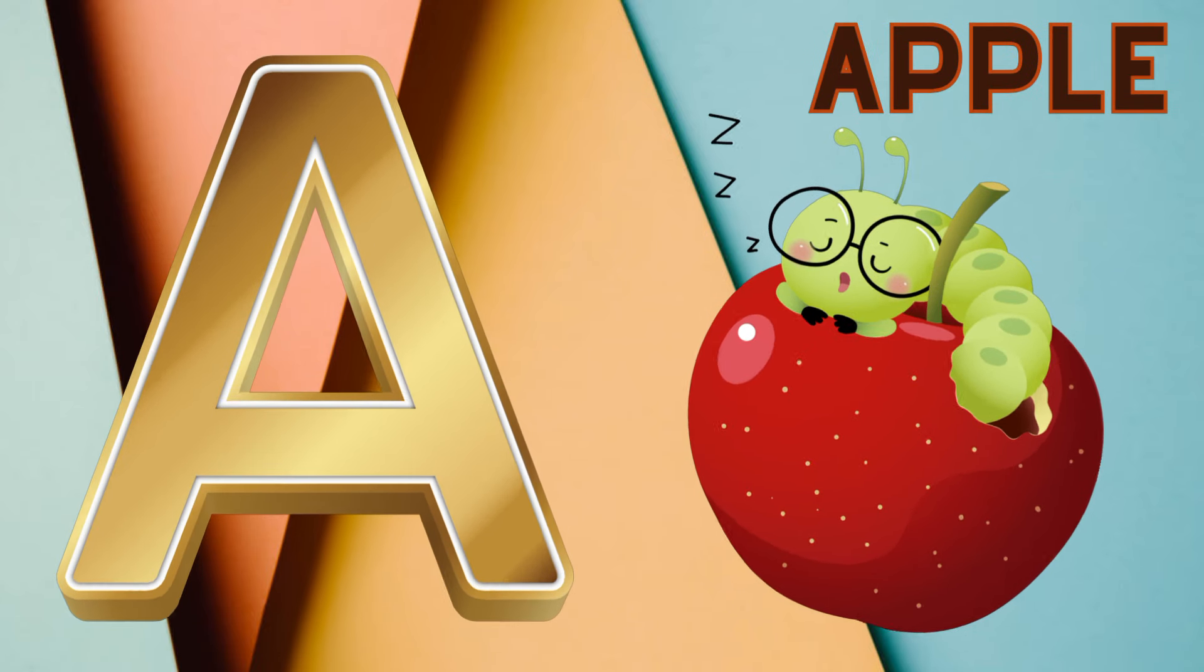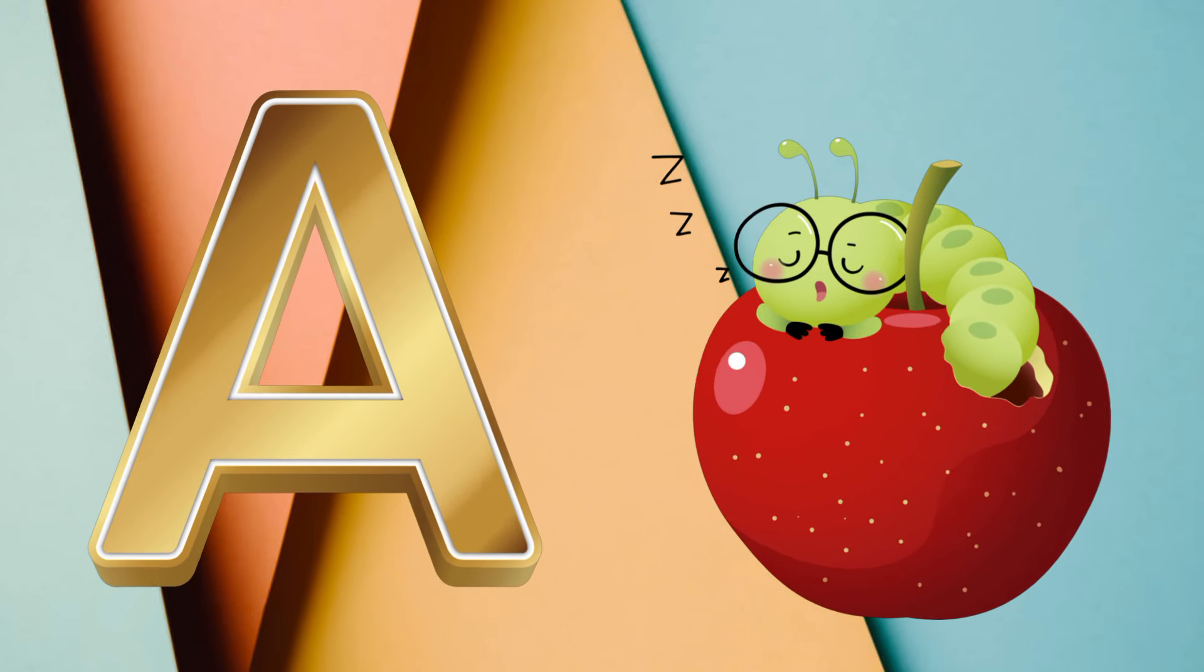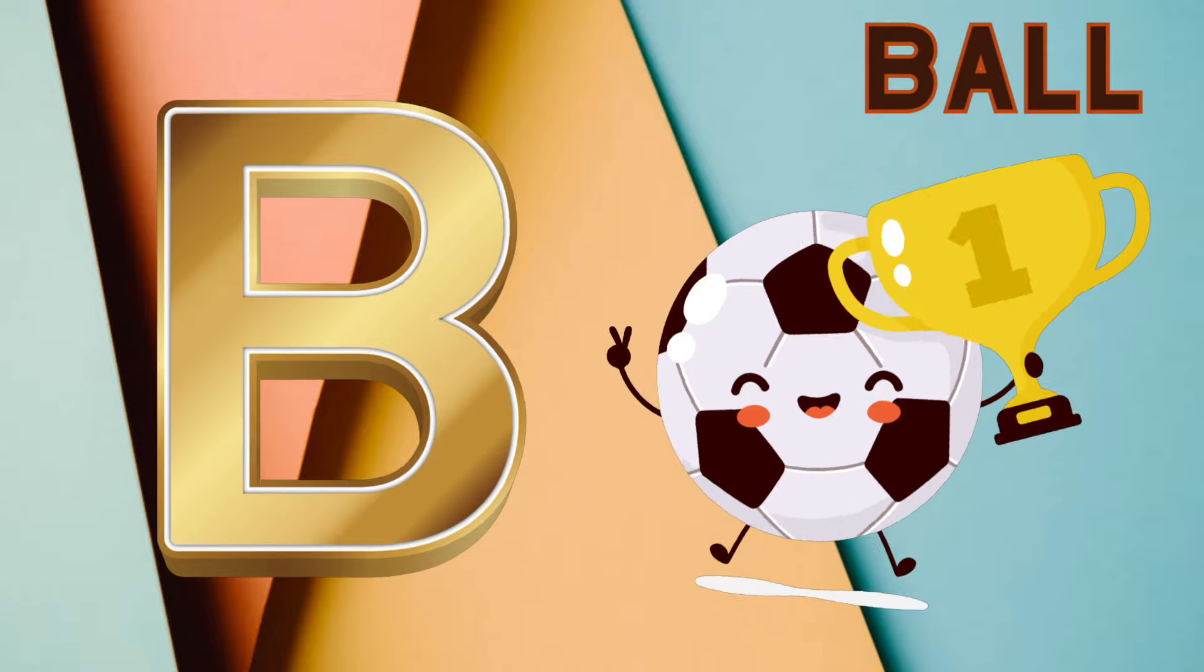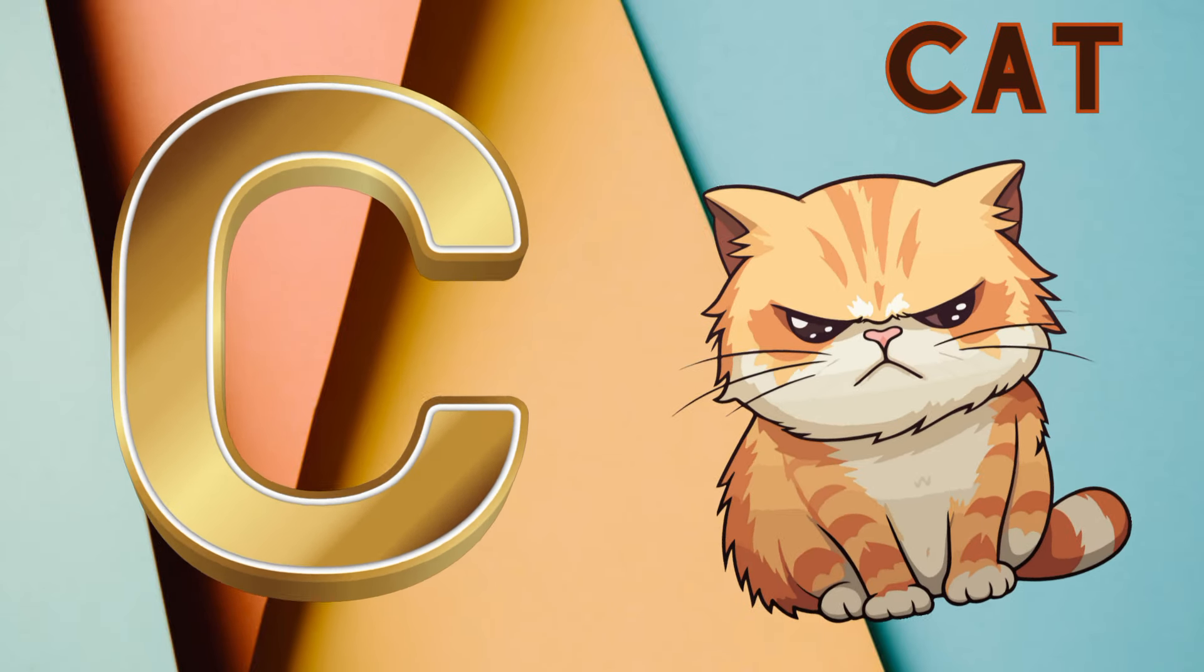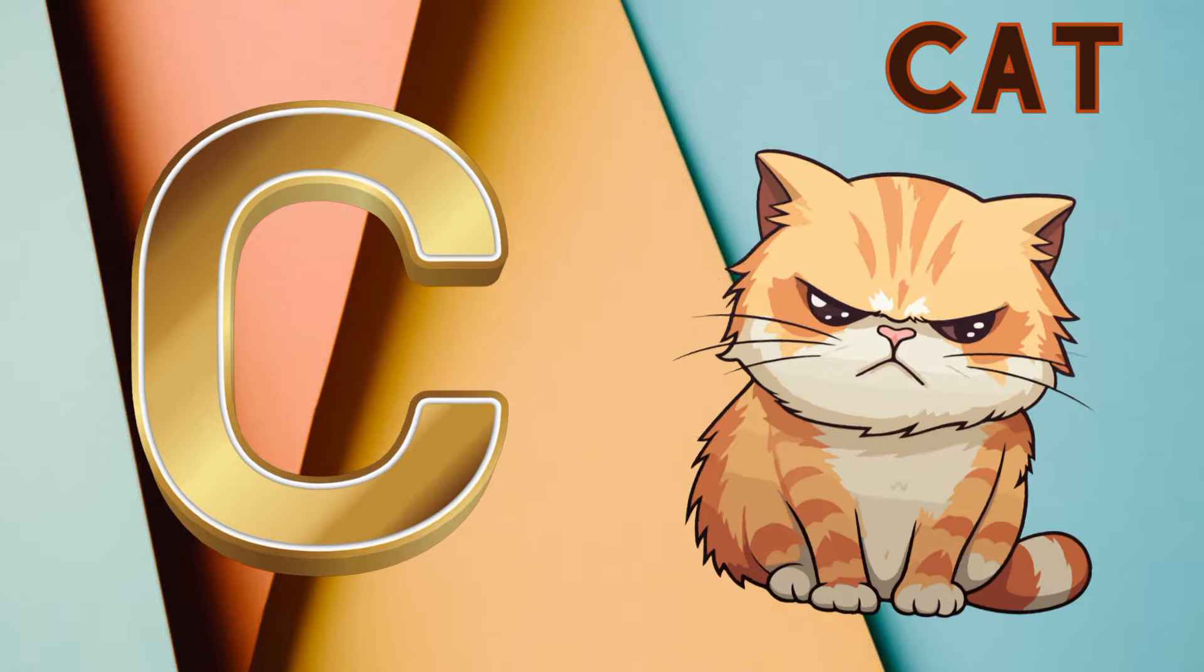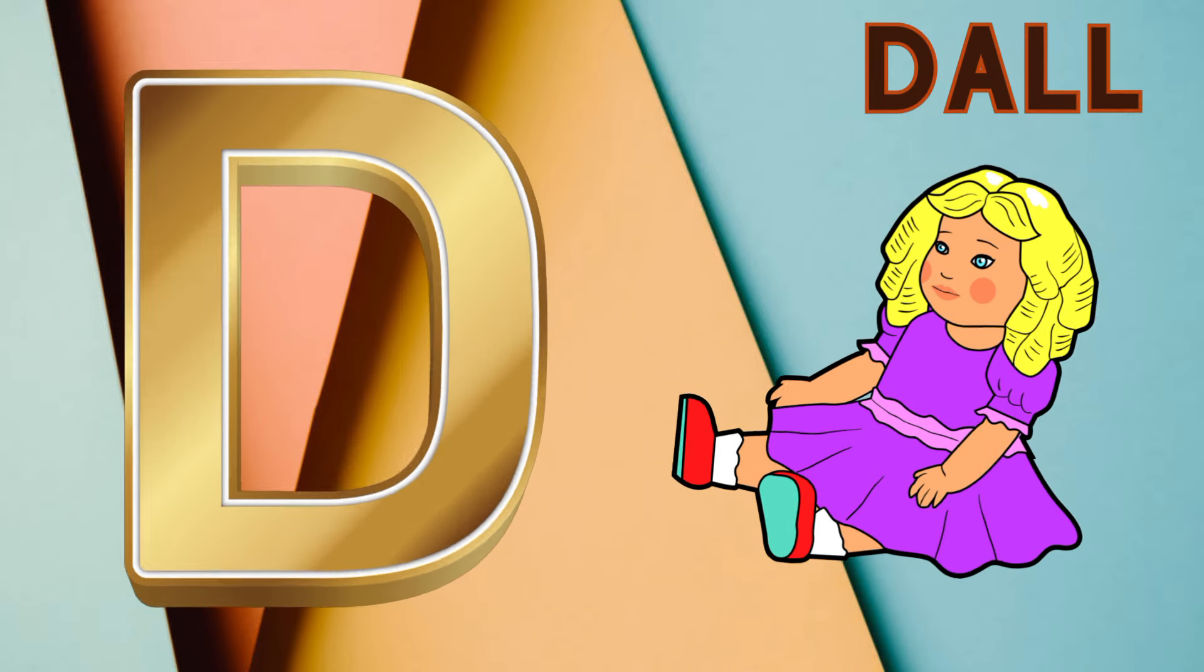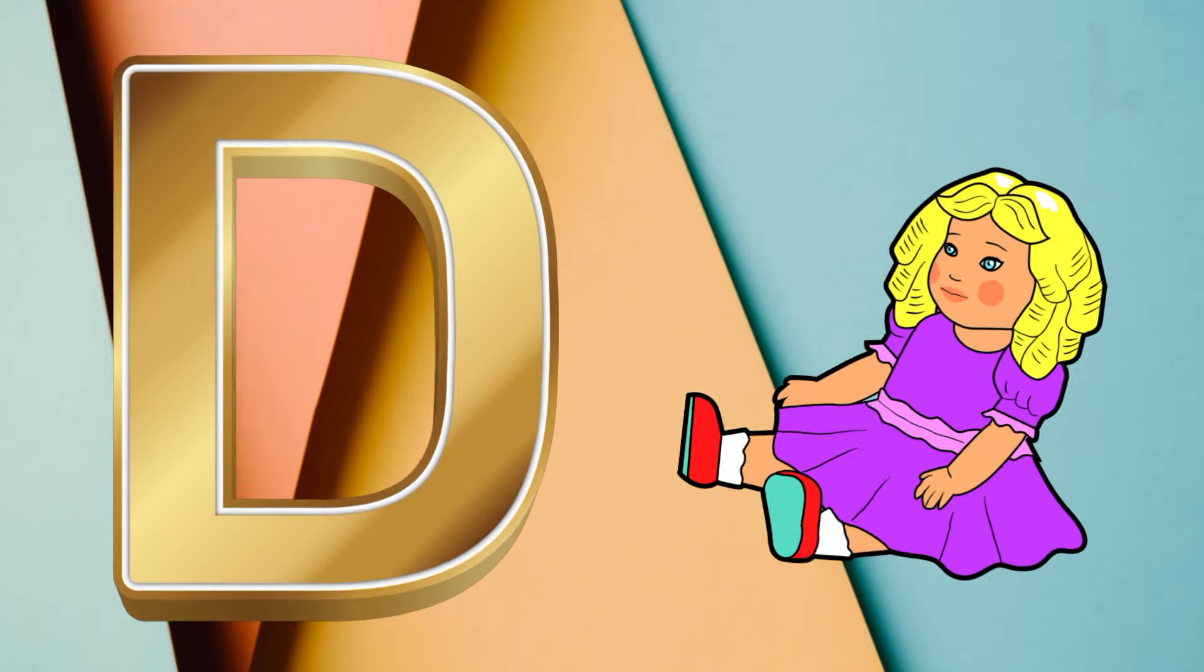A is for apple, a-a-apple. B is for ball, f-f-ball. C is for cat, c-c-cat. D is for doll, d-d-doll.